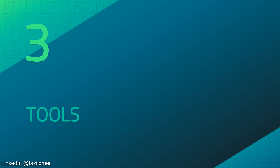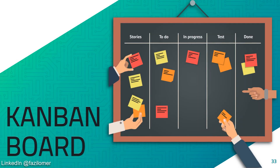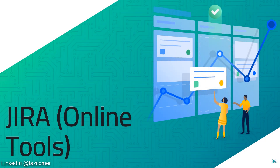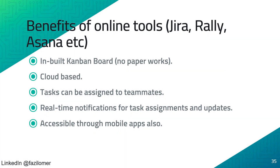Let us discuss a few tools commonly used within the Scrum framework. The Kanban board is used to monitor the progress of user stories in a sprint backlog, with various columns representing the progress of tasks. Jira is an online tool widely used within the Scrum framework to control and monitor the project. Other tools include Rally, Asana, etc. Online tools like Jira have several benefits: an inbuilt Kanban board to avoid sticky notes, real-time notifications for task assignments and updates via cloud-based access, and availability through mobile apps.